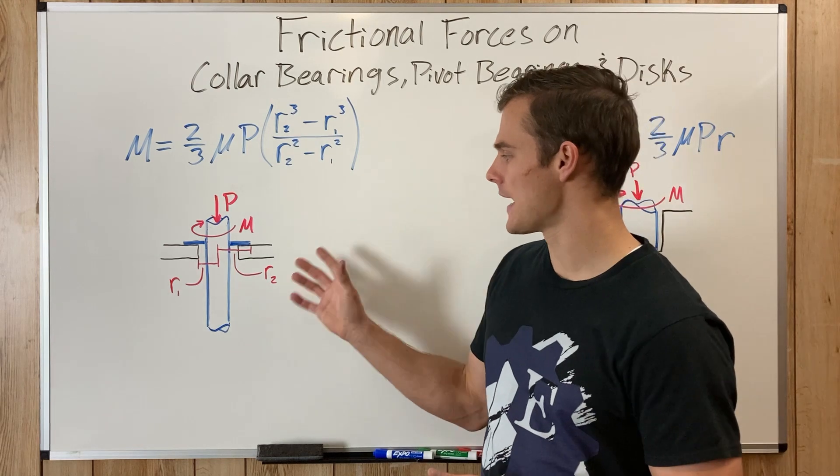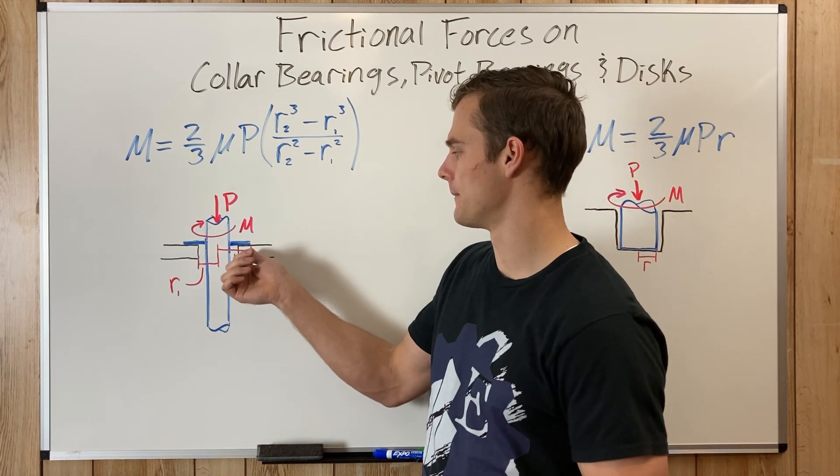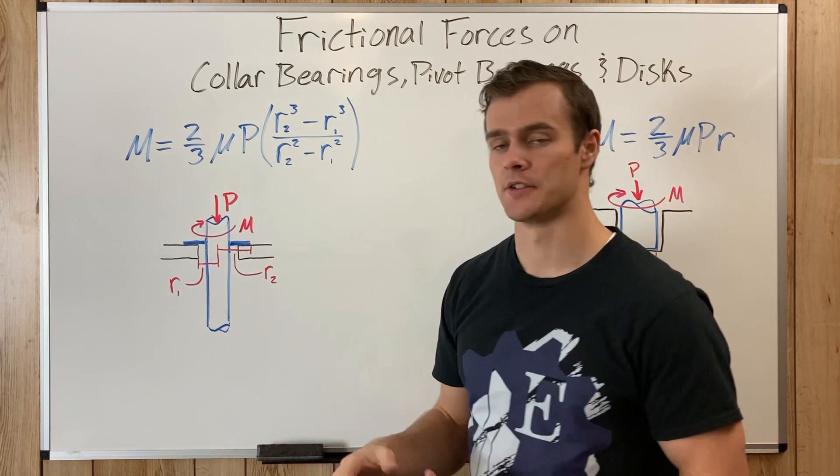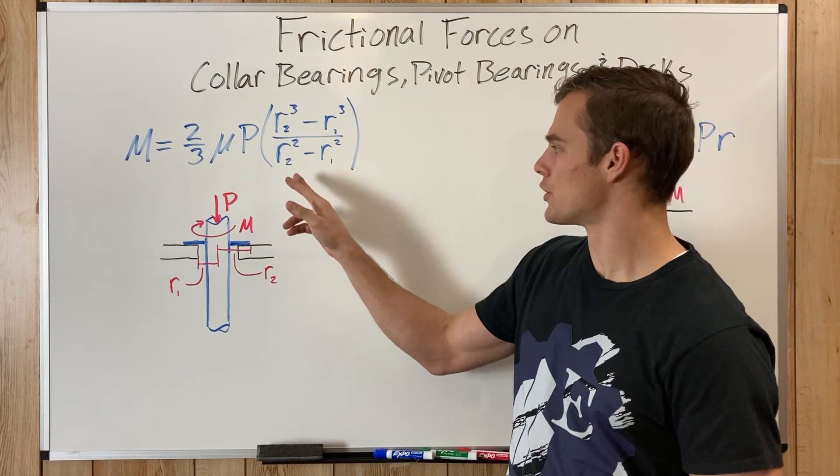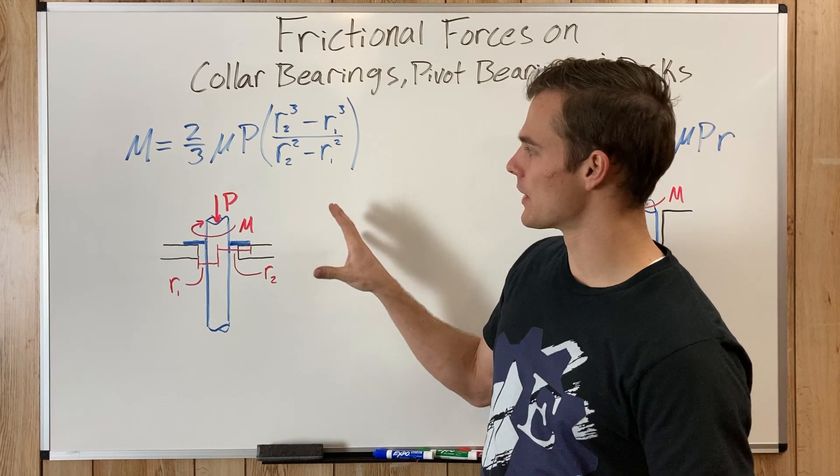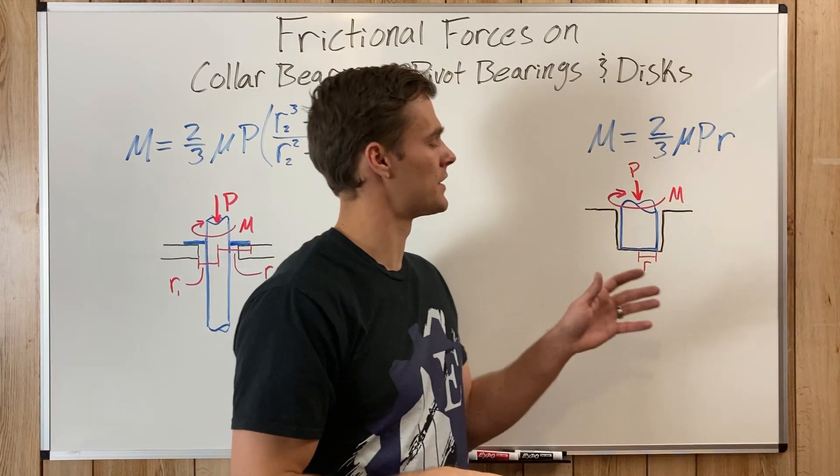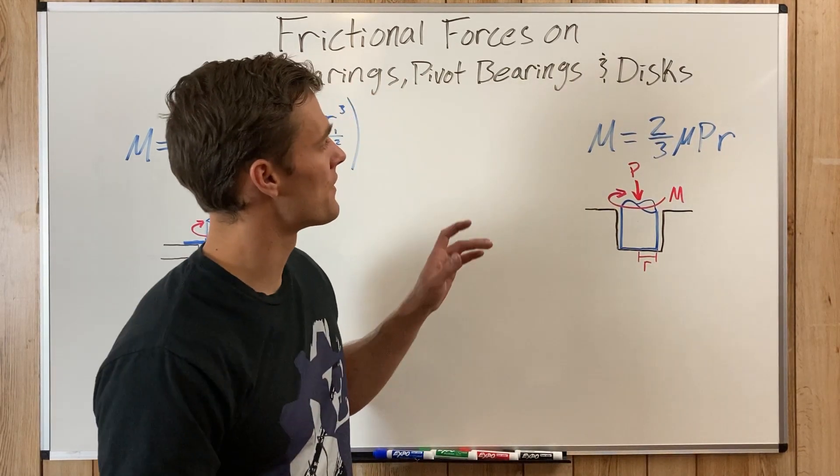And so we are analyzing the frictional forces between the edge of that collar and the edge of the hole. And that's why we have two radiuses involved in this equation. And so this equation goes over collar bearings, and we have this equation that covers pivot bearings and discs.